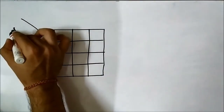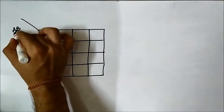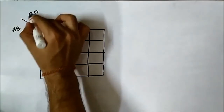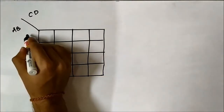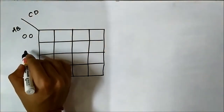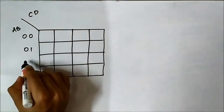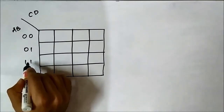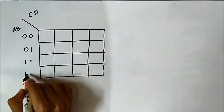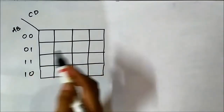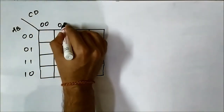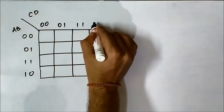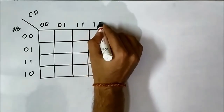For 4 variables, we place 2 variables on one side — let's say A and B — and 2 variables on the other side — let's say C and D. The ordering follows Gray code: 00, 01, 11, 10 on one axis, and 00, 01, 11, 10 on the other axis. This is the important step.